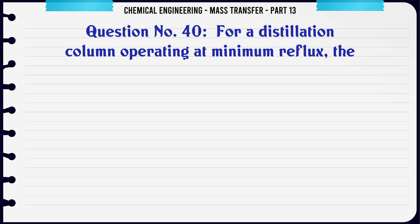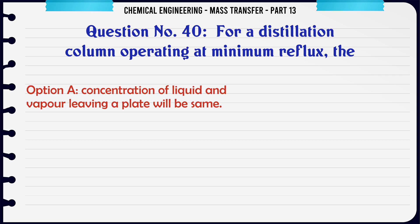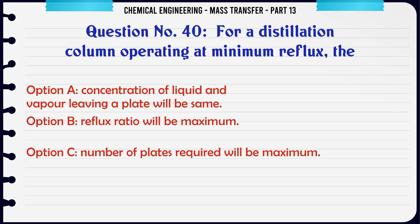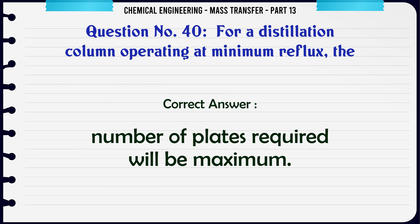For a distillation column operating at minimum reflux, the: A. Concentration of liquid and vapor leaving a plate will be the same. B. Reflux ratio will be maximum. C. Number of plates required will be maximum. D. None of these. The correct answer is: Number of plates required will be maximum.